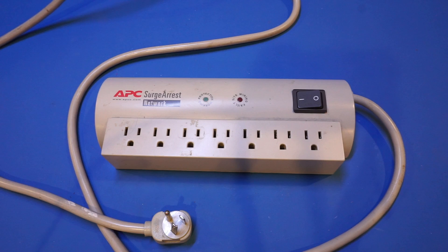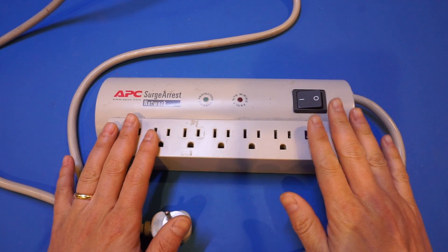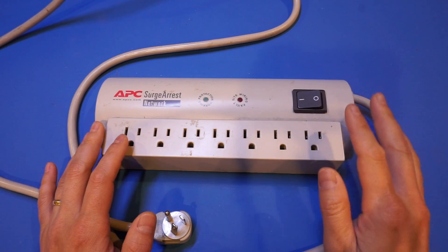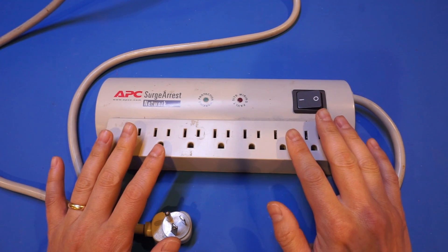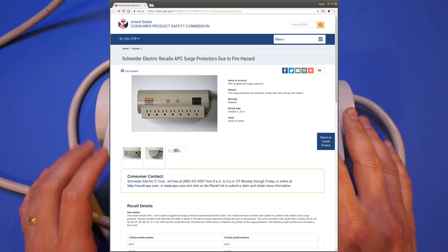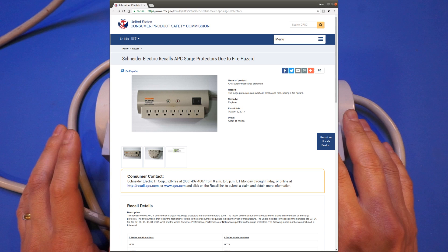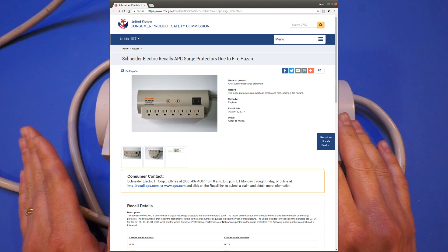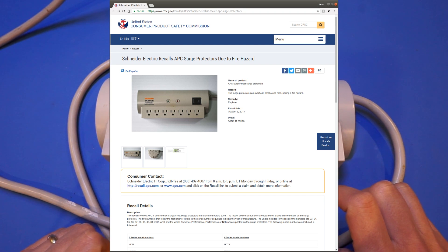Out of curiosity I did a quick search on this APC surge arrest power strip and some recall information showed up. Here's the page on the US Consumer Product Safety Commission's website. The hazard listed was that the surge protector can overheat, smoke, and melt, posing a fire hazard. It was recalled nearly five years ago in 2013.